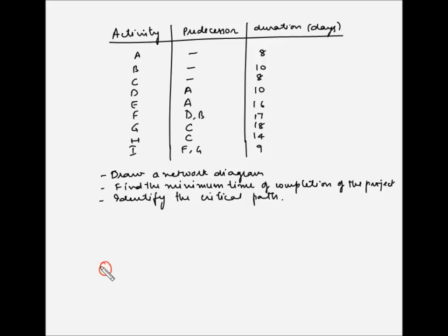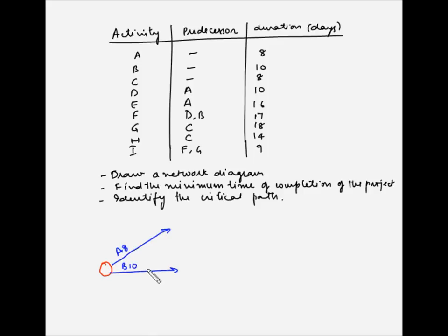This is the starting node. We have been given that A, B, and C do not have any predecessors, so these will start from the starting node. Activity A takes 8 days for completion, B takes 10 days for completion, and C takes 8 days for completion.